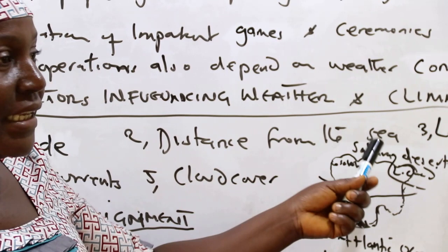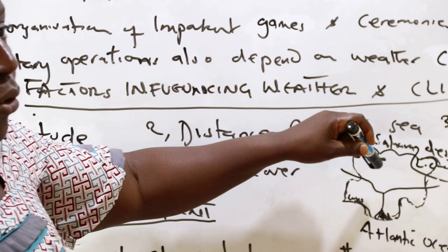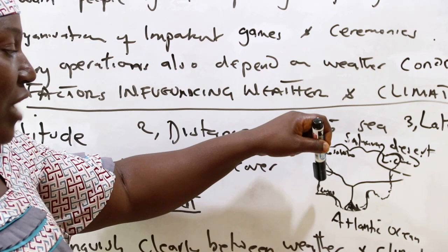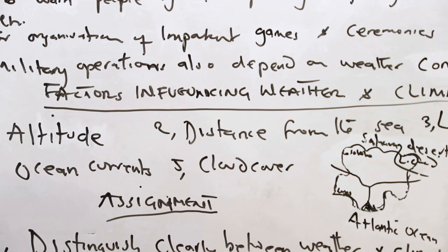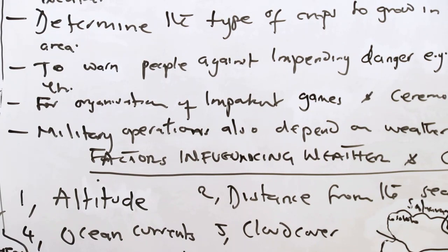The southern parts of Nigeria, being very close to the sea, experience much more rainfall than the northern parts. Because of that, tree crops are mostly grown in the southern parts of Nigeria. As you move to the northern parts, you will discover that more cereal crops are grown there, because the quantity of rain is not as much as in the south. The study of weather and climate helps us know the type of crop that can suit a particular area.